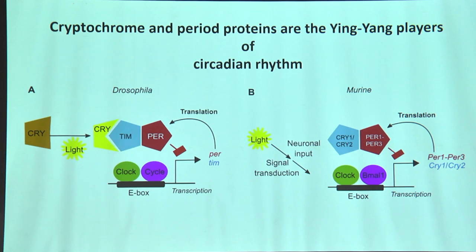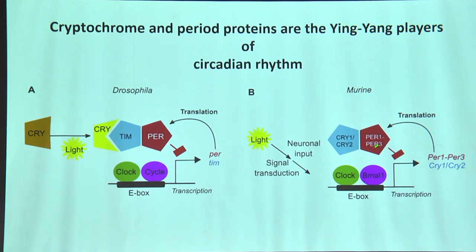These cryptochromes interact with the period proteins — PER1 and PER2 — first discovered in Drosophila, with conserved homologs also found in mouse models. Cryptochrome 1 and 2 proteins interact with these period proteins and form the yin-yang cycle that gives a feedback loop upon day and night.